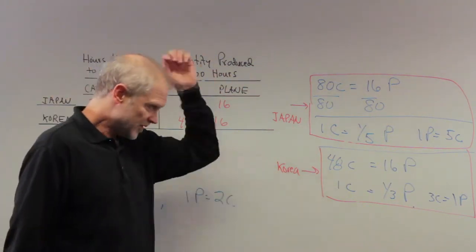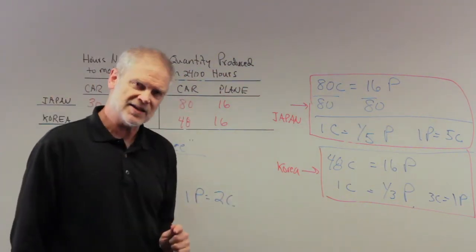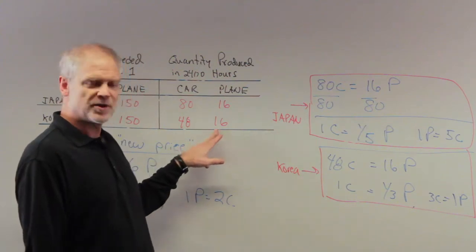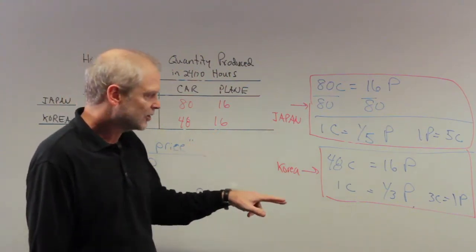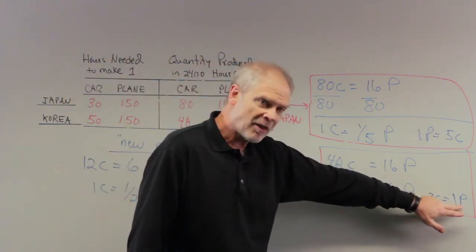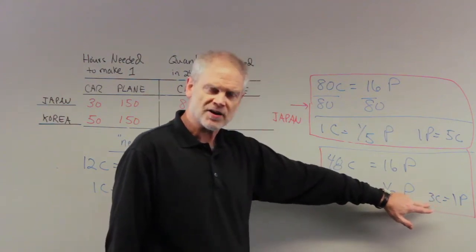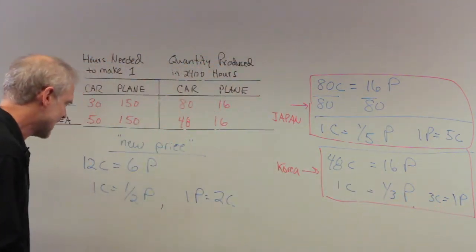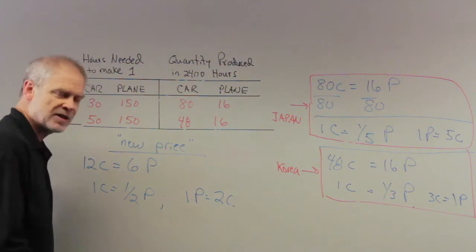Does this help Korea? Well, Korea specialized in planes. So Korea goes and produces 16 planes. Now, alternatively, one plane, every time they produce a plane, they gave up three cars. But here, this is saying that one plane is only going to buy two cars.